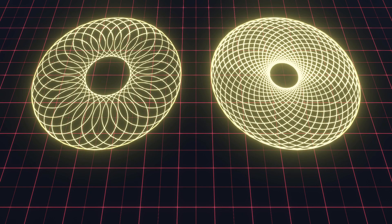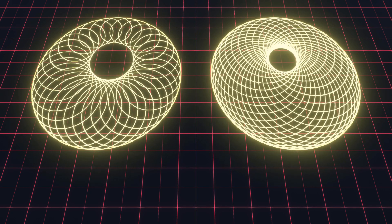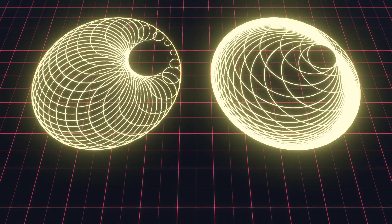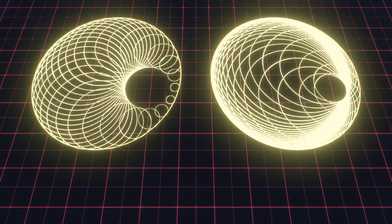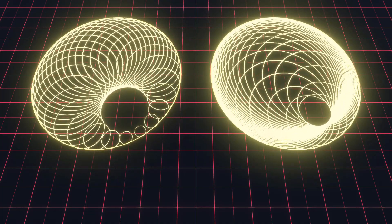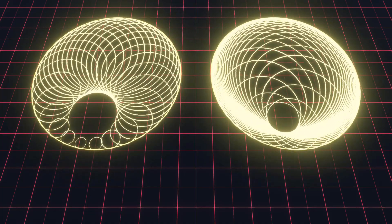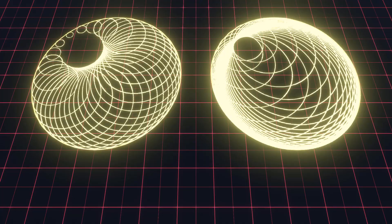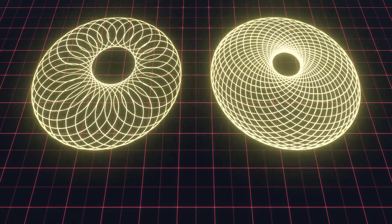Welcome to part 2 of the Circle Tangent Visuals in Unity Tutorial by PeerPlay. In the previous part we calculated the tangent of the outer circle by an angle. In this part we will write out the equation to find a circle that is tangent to two other circles.